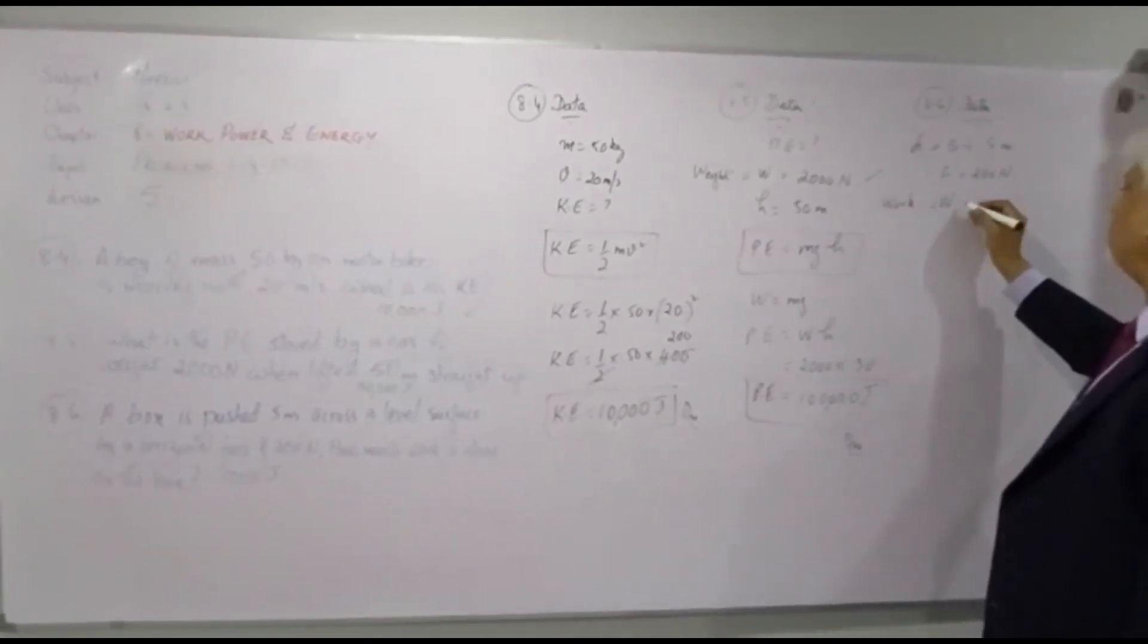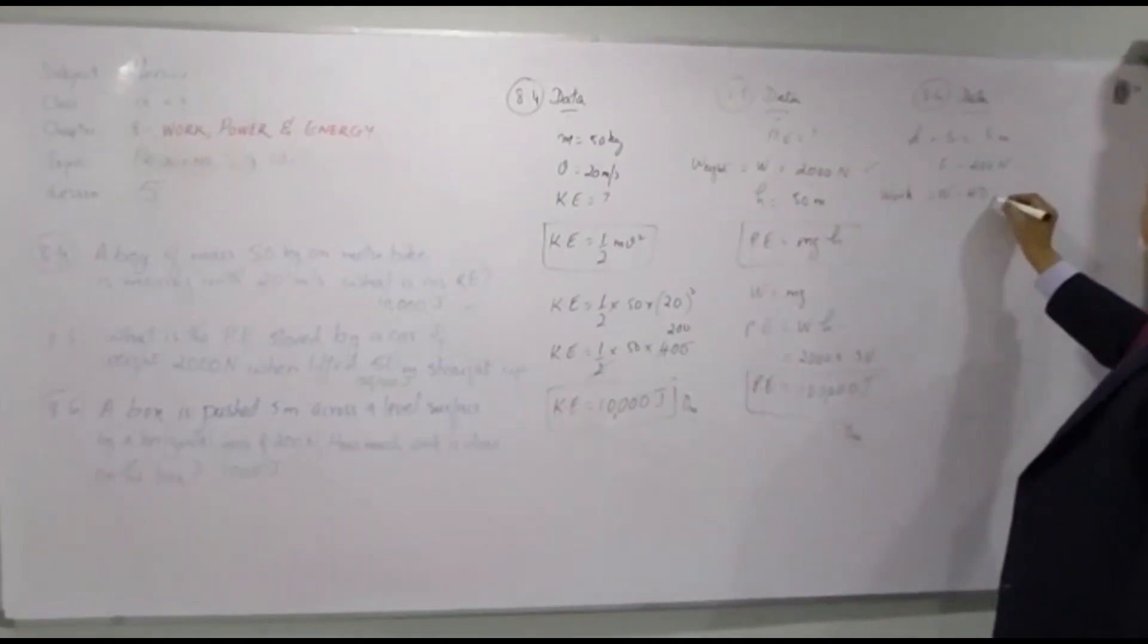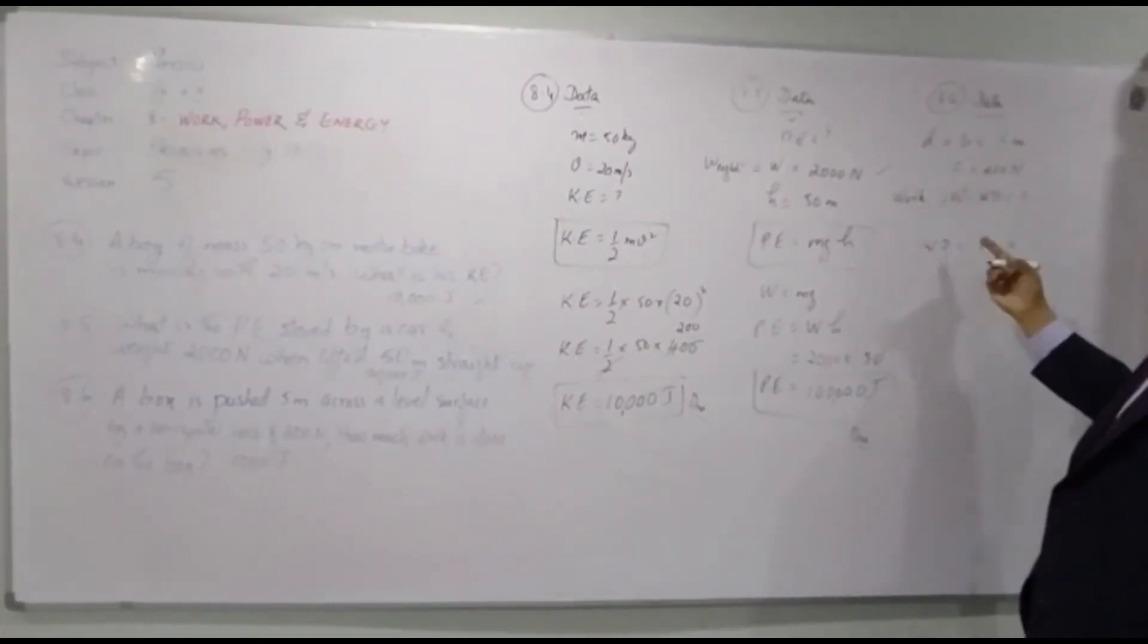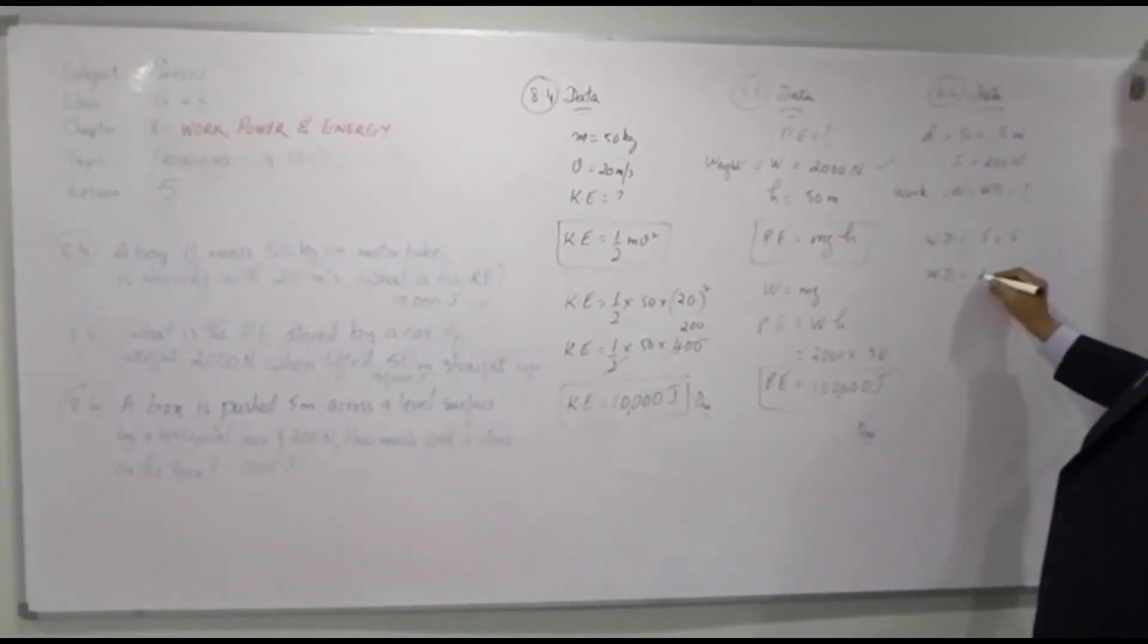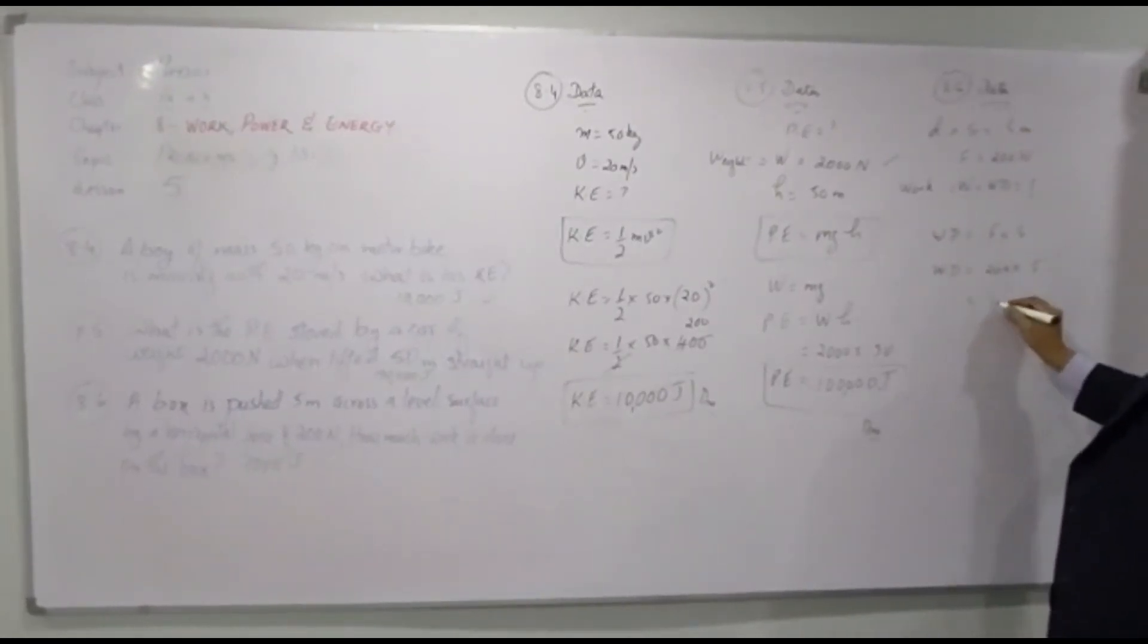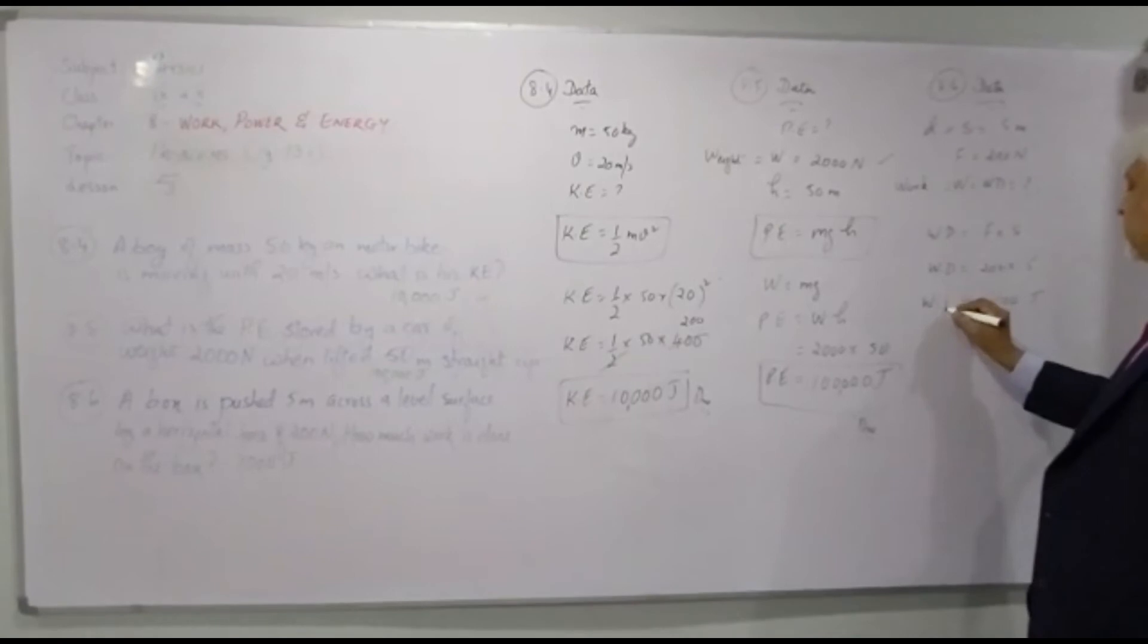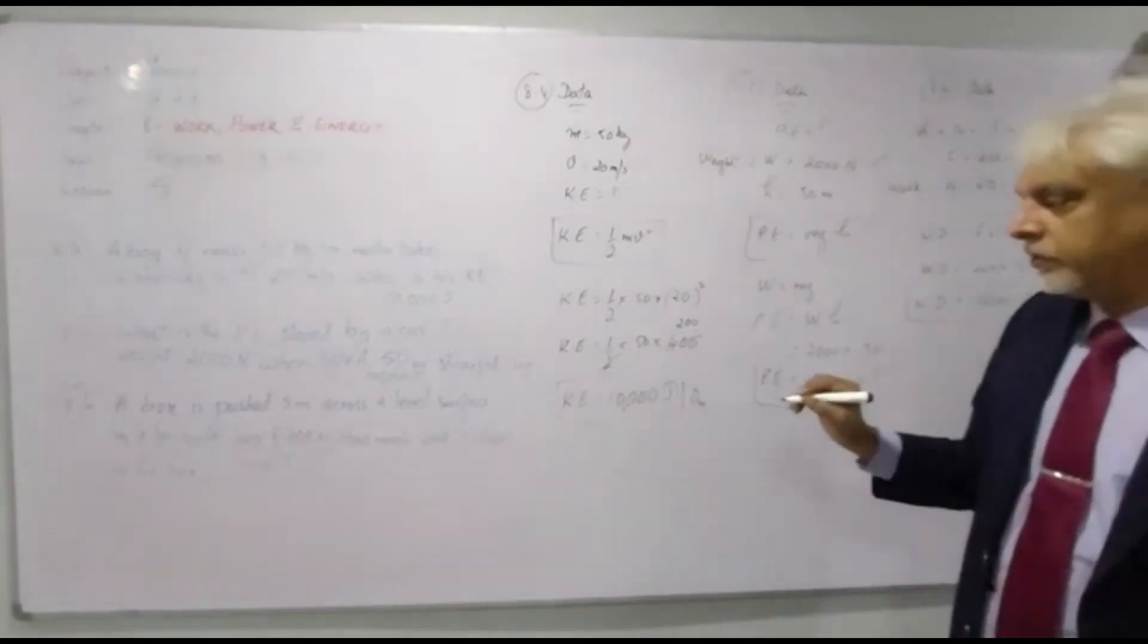Let me put it as WD in order to avoid confusion between weight and work. So work done is equals to force into distance or displacement. Work done is what you need to calculate. Force is 200 Newton times distance, distance covered is 5 meters. This will give you 1000 joules. This will be your work, amount of work. 1000 joules is the correct answer.